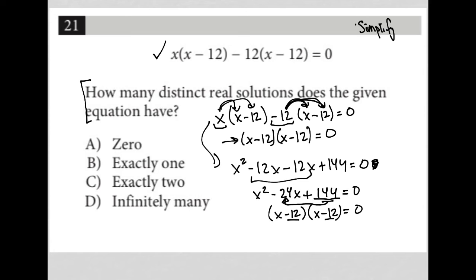Now, to solve here, this x minus 12 times x minus 12 equals 0, I know that the solution here is x equals 12.